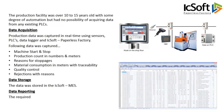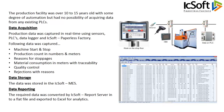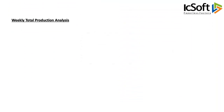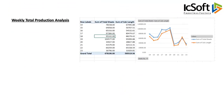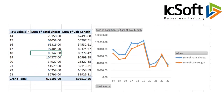The required data was converted by the ICSoft report server into a flat file and exported to Excel for analytics. Production analysis per week shows that production during weeks 20, 21, and 23 are low.